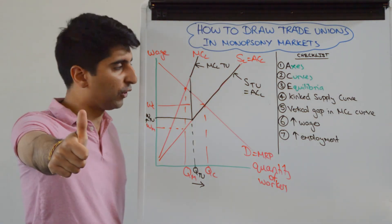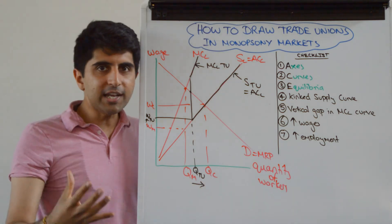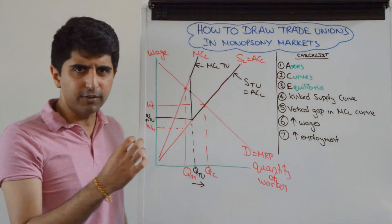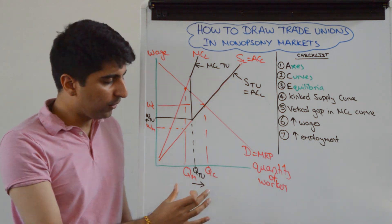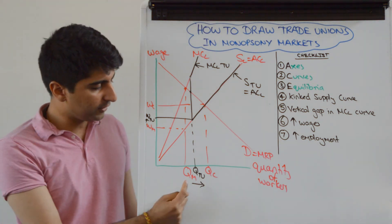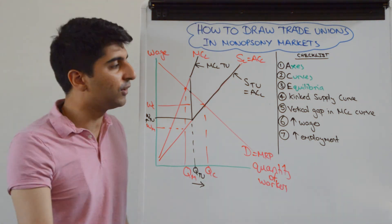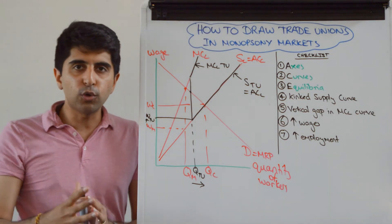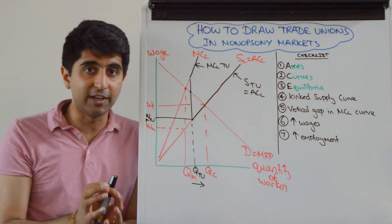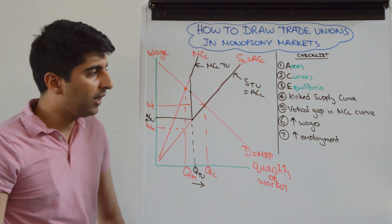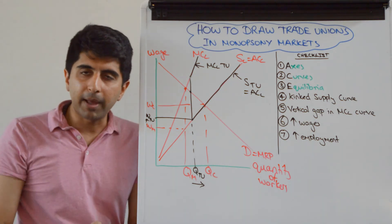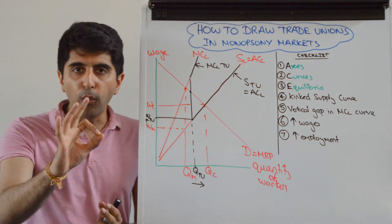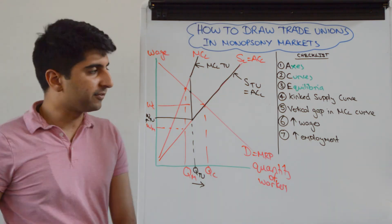Have you shown the higher wages with the trade union getting involved? Yes. Have you shown the higher employment? Yes — it looks beautiful. Having this checklist in your head ensures that when you finish the diagram, you have truly finished it. On top of that: have you drawn it in pencil? Have you used a ruler? All very important things to confirm.